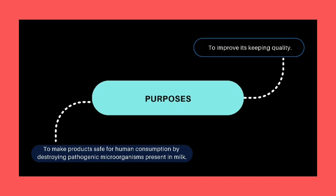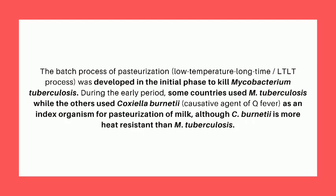Milk is pasteurized for two purposes: to make products safe for human consumption by destroying pathogenic microorganisms present in milk, and to improve its keeping quality. The batch process of pasteurization was developed in the initial phase to kill Mycobacterium tuberculosis. During the early period, some countries used Mycobacterium tuberculosis as an index organism, while others used Coxiella burnetii, the causative agent of Q fever, as an index organism for pasteurization of milk.